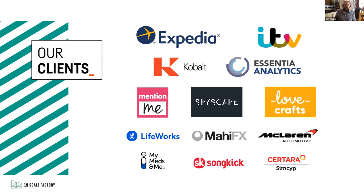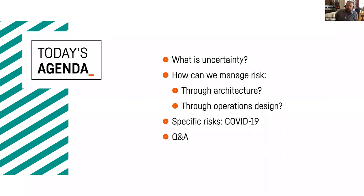Today we're going to define uncertainty and talk about what it actually means, then discuss how we manage the risk that uncertainty introduces — both through good architectural choices and through good operational design. Given the current climate, the main source of uncertainty right now is the pandemic, so we'll talk about specific risks and mitigations around that, and then move on to a Q&A.